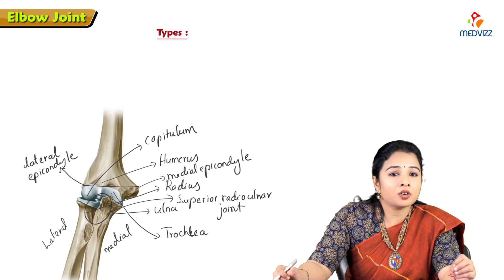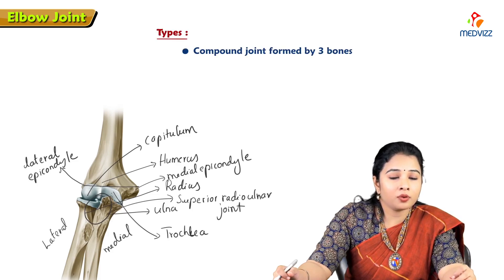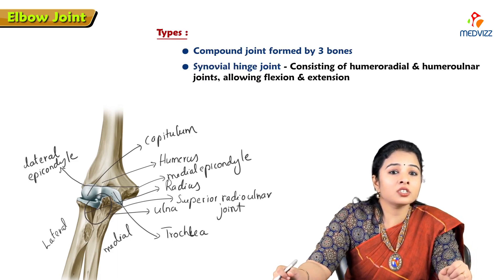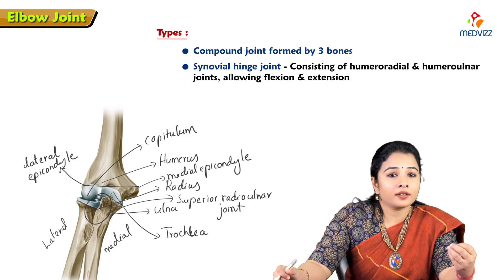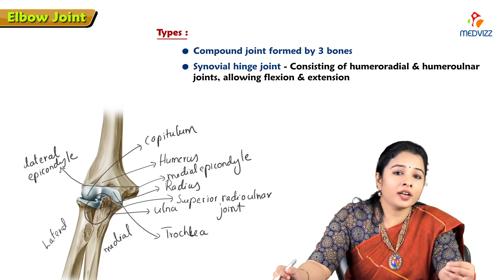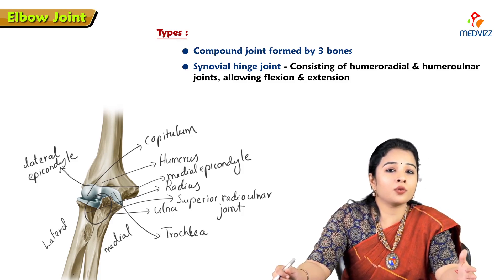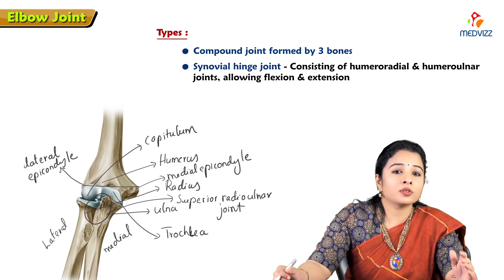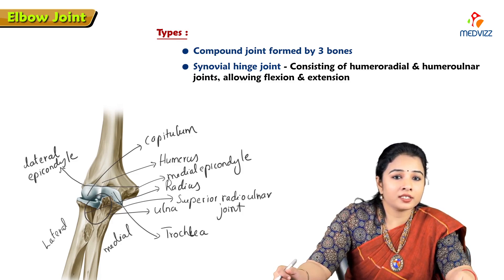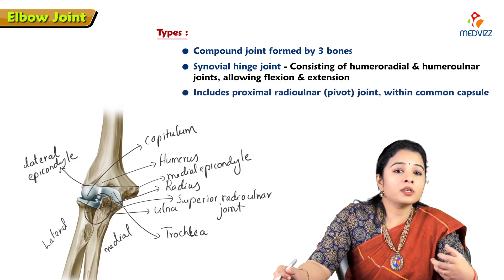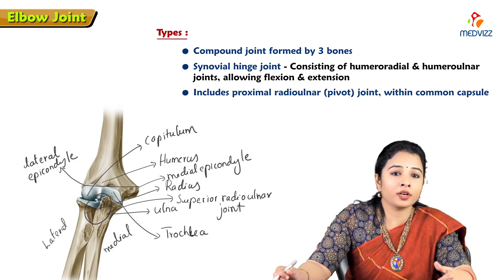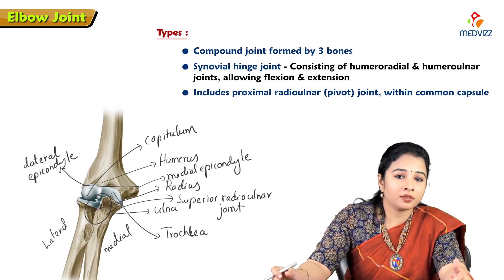The elbow joint is a compound joint formed by three bones and is classified under synovial joints. It is a hinge variety of synovial joint, allowing flexion and extension — movements in one plane about a single axis. It also includes the proximal radio-ulnar joint, which is a pivot joint sharing the common capsule.